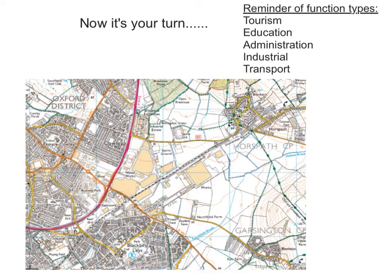Hopefully you have identified these large buildings here. Next to the word 'motor works' or 'works,' we can infer that this has an industrial function. And indeed it is a place called Cowley, South East Oxford, where they make the BMW Mini.